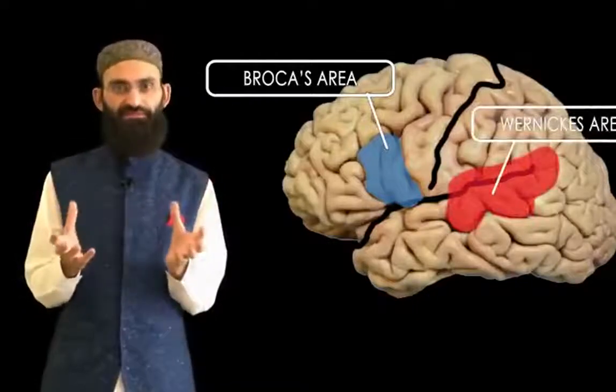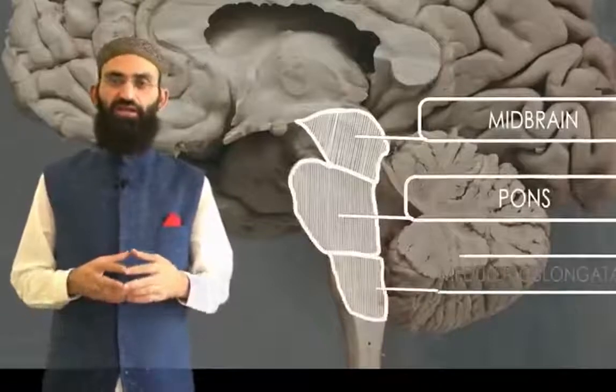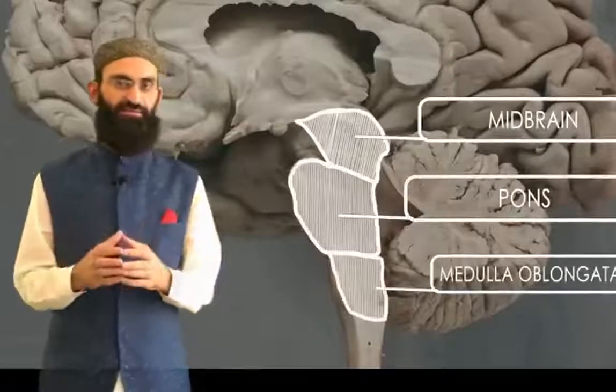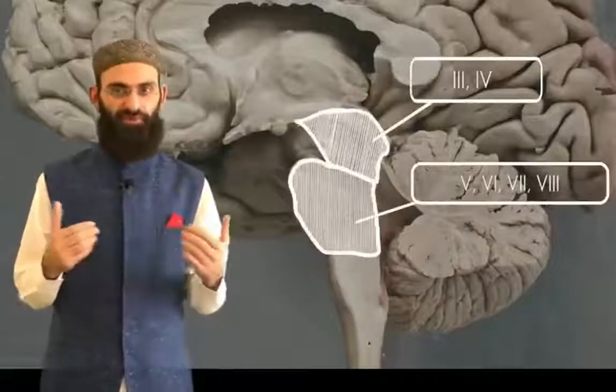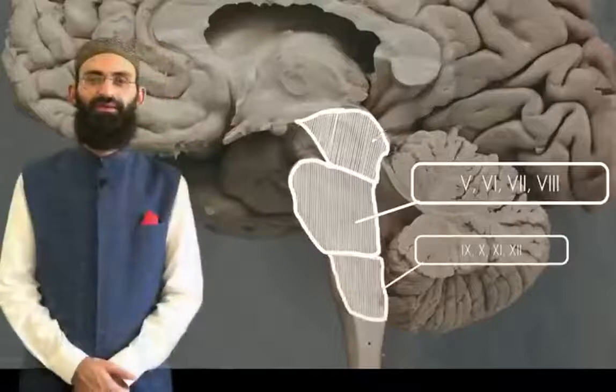The cerebral hemispheres are connected to the brainstem through cerebral peduncles. The brainstem has three parts: midbrain, pons, and medulla oblongata. A number of cranial nerves leave the brainstem — the third and fourth cranial nerves leave the midbrain, while the fifth, sixth, seventh, and eighth cranial nerves leave the pons. The last four cranial nerves leave the medulla oblongata. The medulla oblongata passes through the foramen magnum and continues as the spinal cord.